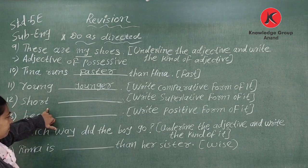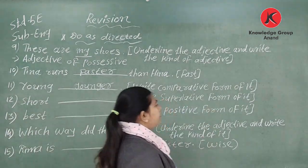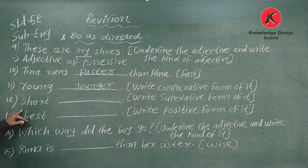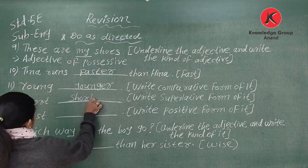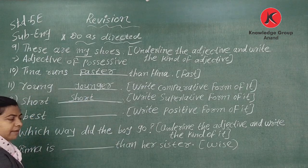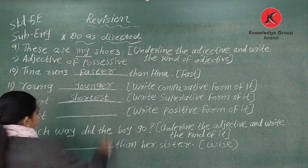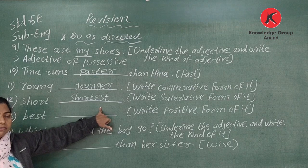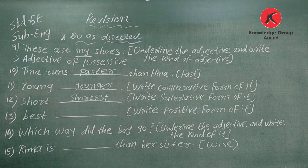Number twelve: 'Short' — bracket says superlative form. So here we have superlative degree. Short plus E-S-T gives 'shortest.' So superlative form we add E-S-T, and comparative form we add E-R.